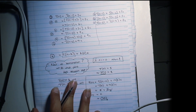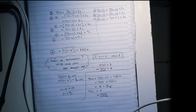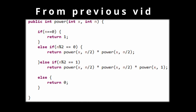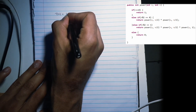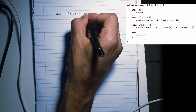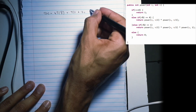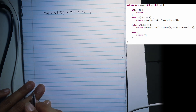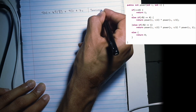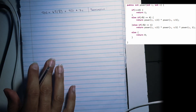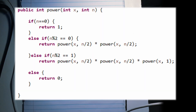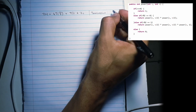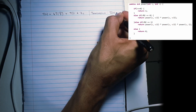This approach works for all T(N) expression problems. The T(N) expression is written as follows. The thing I like to do is write the termination condition on the side. Let's read the code to find the termination condition: if N equals zero, return one. So T of zero equals one.